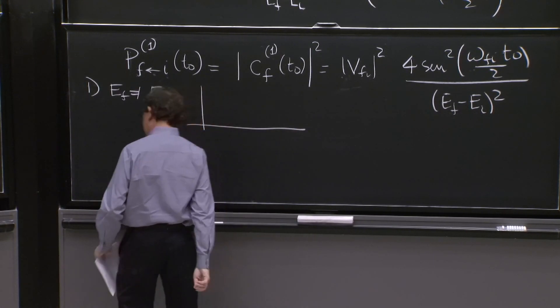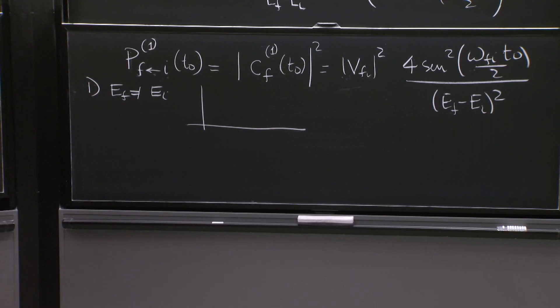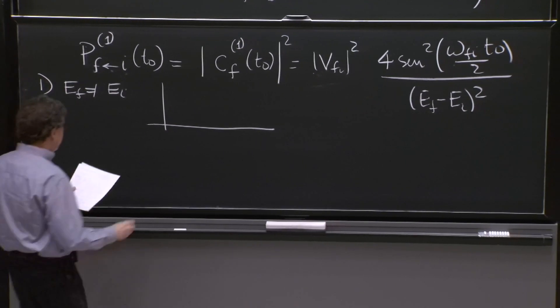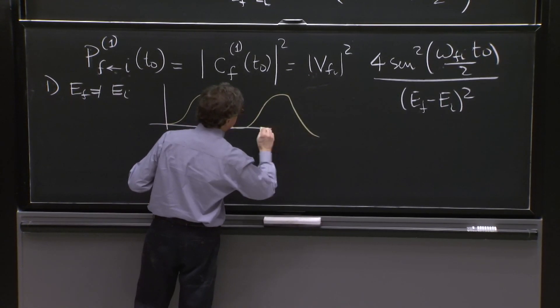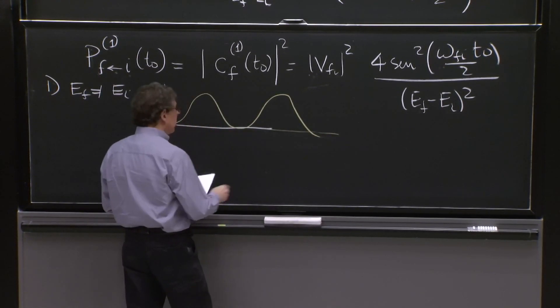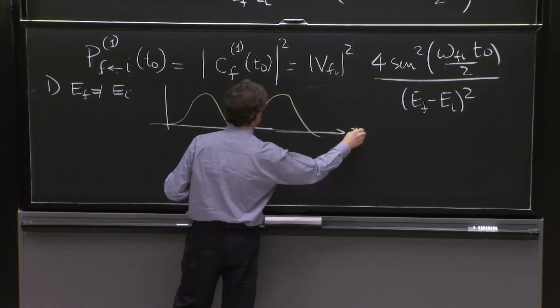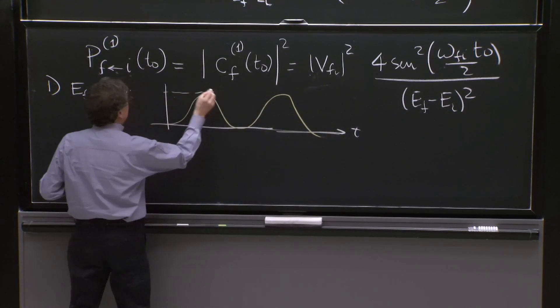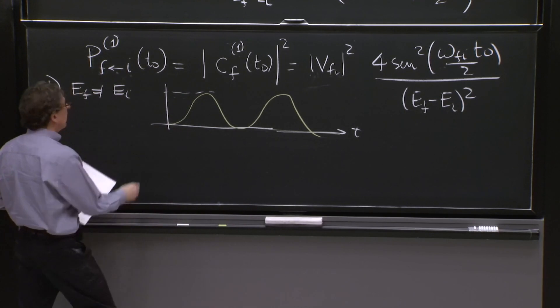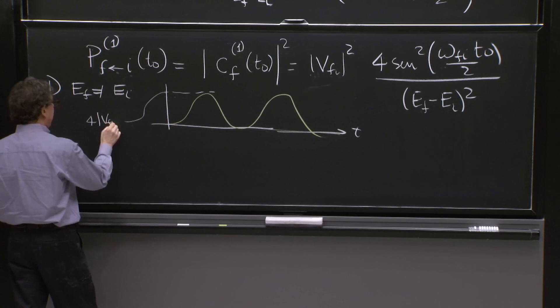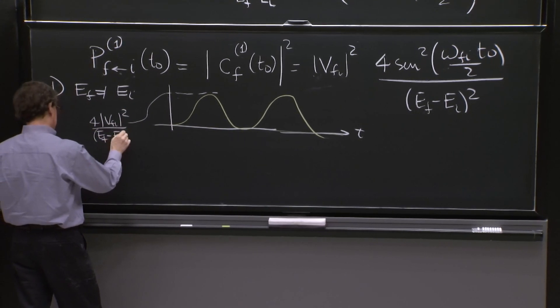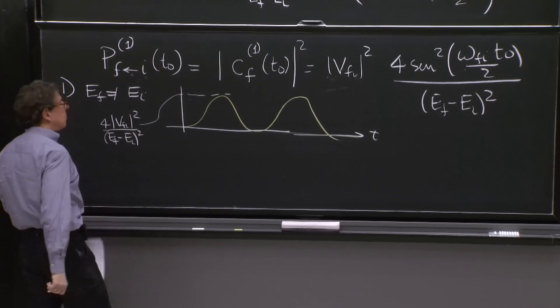Well, it looks like this. I brought some other chalk. Not that it helps too much. But it looks like this. As a function of time, the height here is height 4 vfi squared over ef minus ei squared.